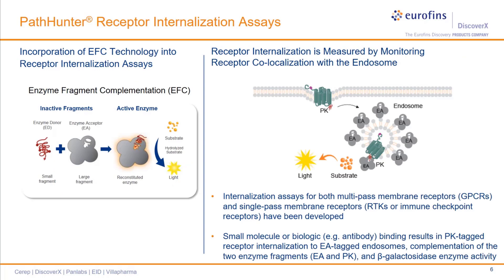The PathHunter internalization assays use our patented industry-validated enzyme fragment complementation, or EFC, to detect internalization, and is based on a split beta-galactosidase enzyme. The beta-galactosidase enzyme is divided into two fragments: the smaller enzyme donor fragment, shortened to ED, and the enzyme acceptor, or EA, fragment, which comprises the bulk of the enzyme. Independently, the two enzyme fragments have no enzyme activity, but when combined or brought into proximity, the two fragments can complement to form a functional enzyme capable of hydrolyzing substrate to produce a chemiluminescent signal.